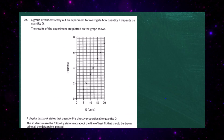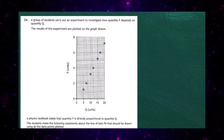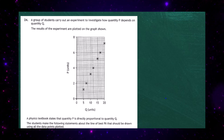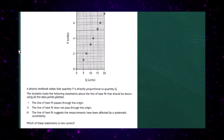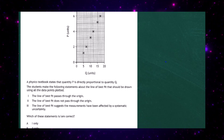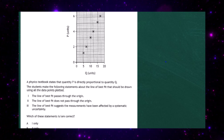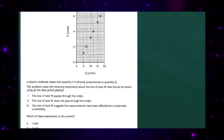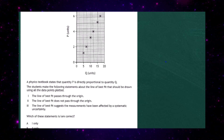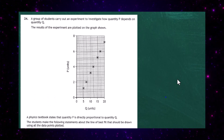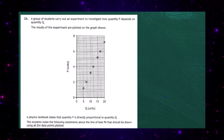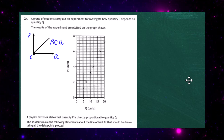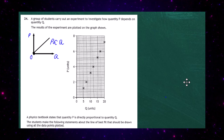Question 24 from the 2023 Higher Physics Examination paper 1. A group of students investigate how quantity P depends on quantity Q, plotting results on a graph. A physics textbook states that P is directly proportional to Q. If P is directly proportional to Q, we should expect a straight line passing through the origin — those are the two key features of direct proportionality.